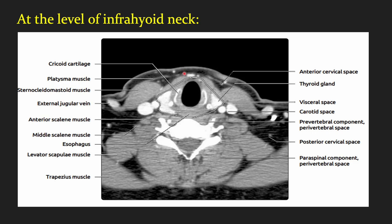Coming to a section below at the level of the infrahyoid neck, in the center we have the visceral space which is the continuation of the pharyngeal mucosal space. It encompasses the pharynx, hypopharynx, thyroid and parathyroid gland along with the thyroid cartilage. Laterally on both sides we have the carotid space, and posteriorly we have the perivertebral space.